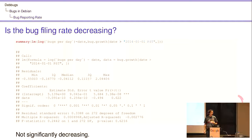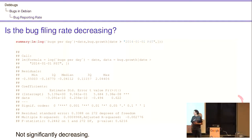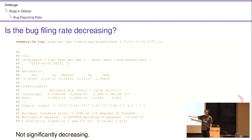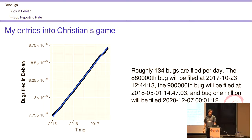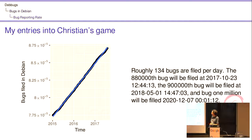I'm actually a bioinformatician — that's my day job. To give a more formal answer: there's no significant decrease in bugs from 2014 to today. The p-value is 0.6 and the estimate may be slightly decreasing, but it's 10 to the negative 10, so that's basically not significant. That's good, but this is also a problem because it's not increasing either — it doesn't mean we're getting more engagement over time, which may be something we need to think about. Roughly 134 bugs are filed per day. I predict the 880,000th bug will be filed on October 23rd, the 900,000th bug in 2018, and we'll file bug 1 million sometime in 2020. Over time it's been roughly linear, the increase in bugs.